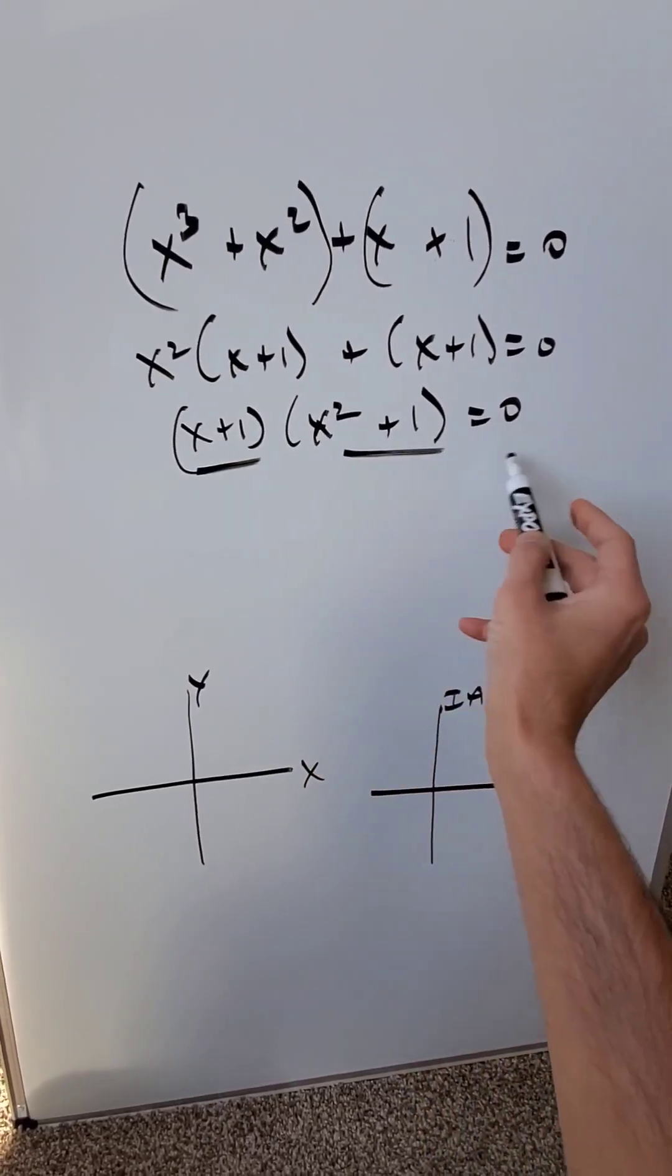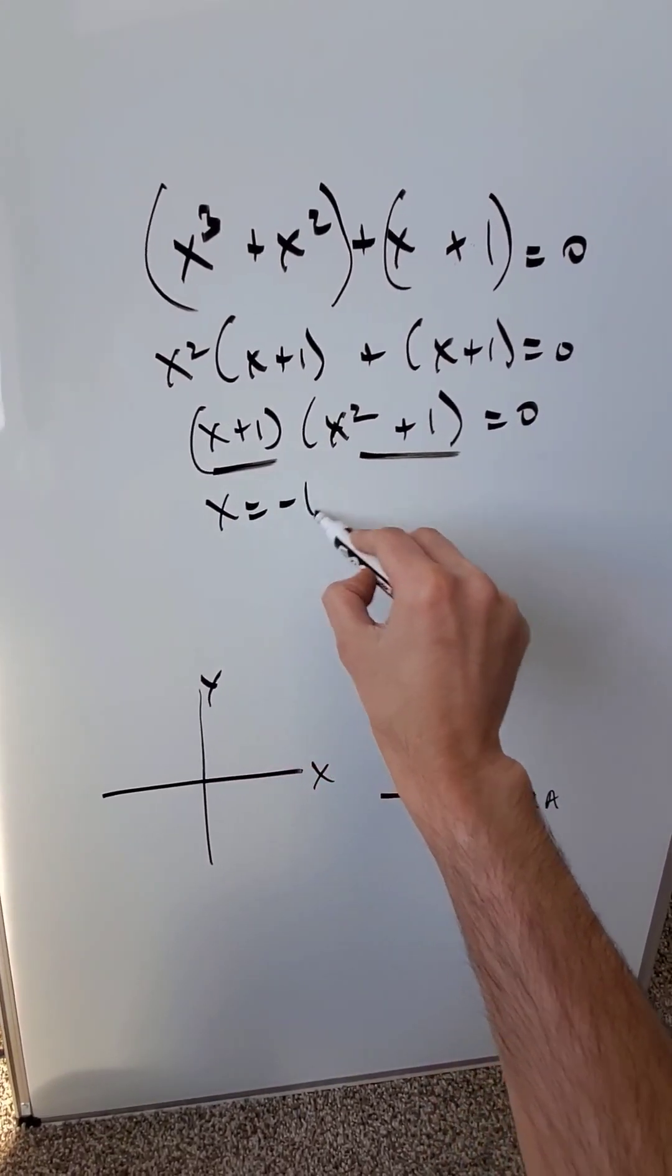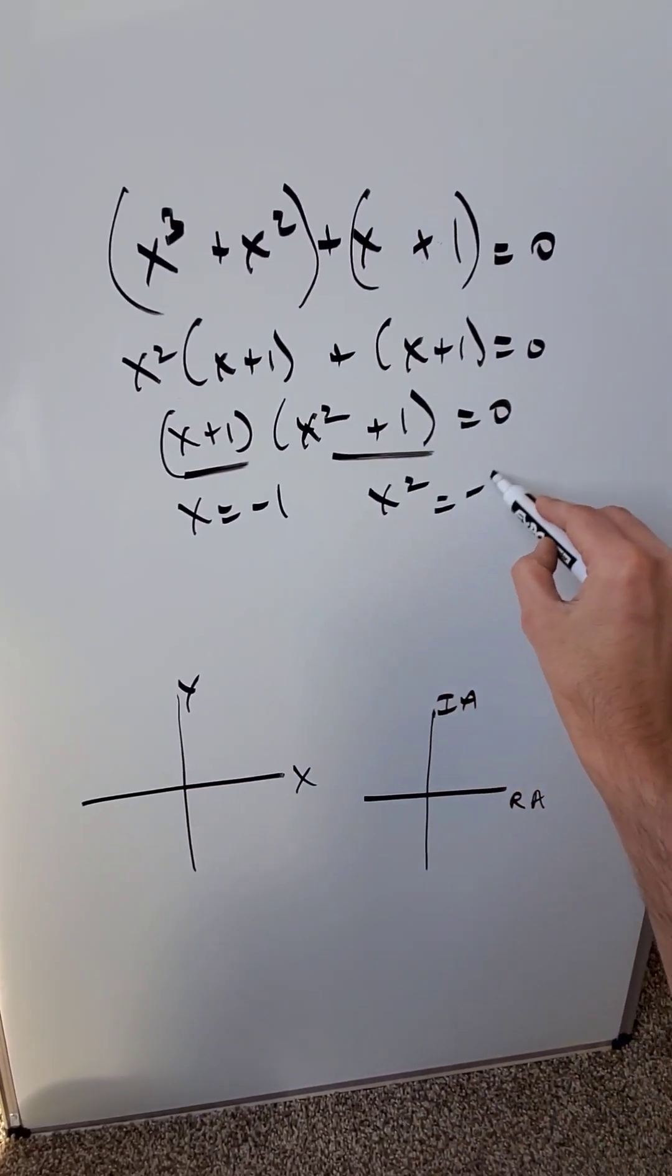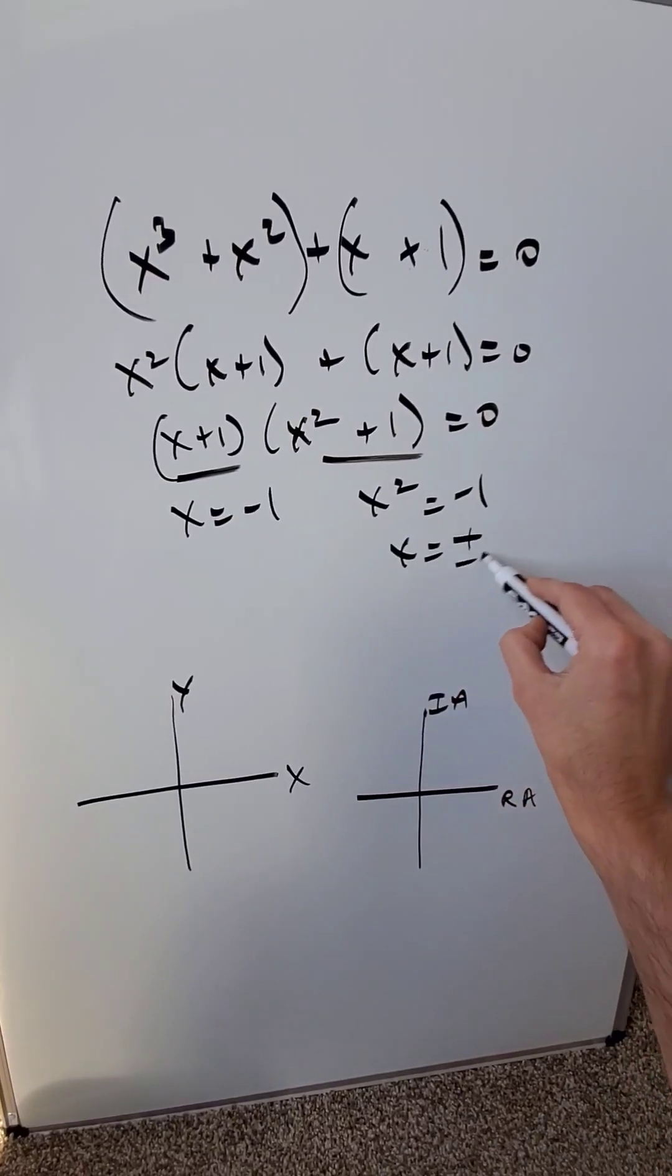Equal these independently to zero and solve for x. Here you're getting x equals minus one. Here you have x squared is equal to minus one, so x here is equal to plus and minus i.